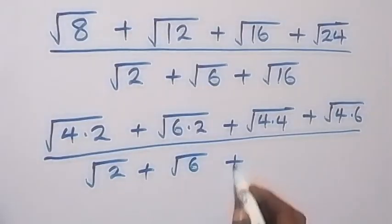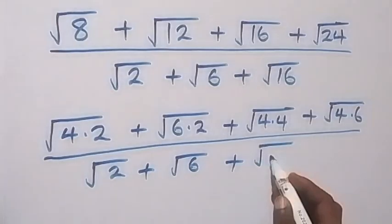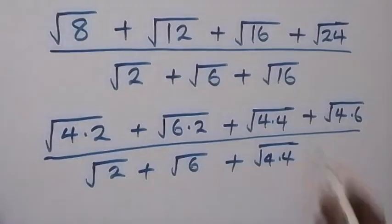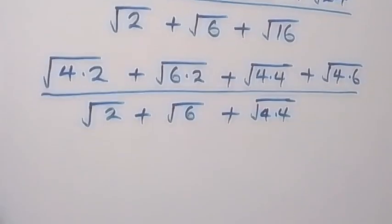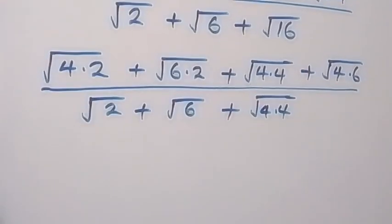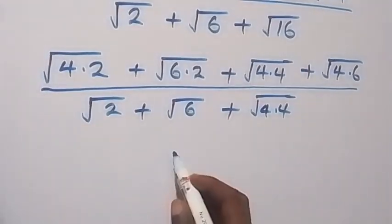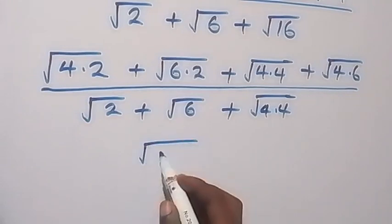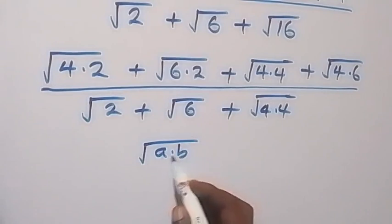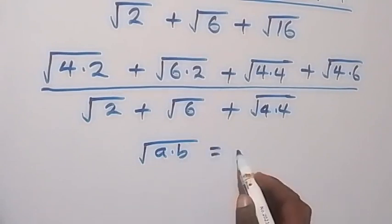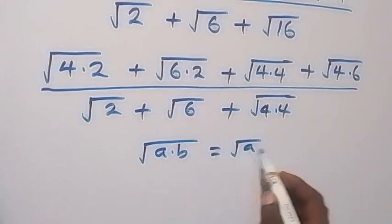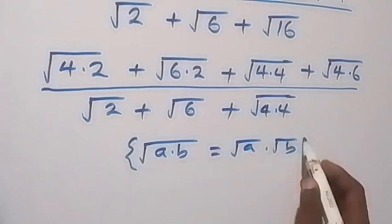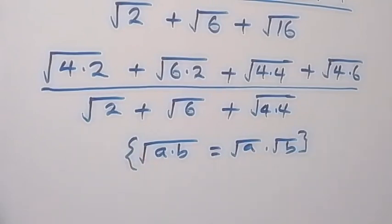Plus root 4 times 4 as well. Then in the next step, let's write this in this format. From the rule we have: when we have root(a·b) this gives us root(a) times root(b). We can separate this from here, then applying that here.